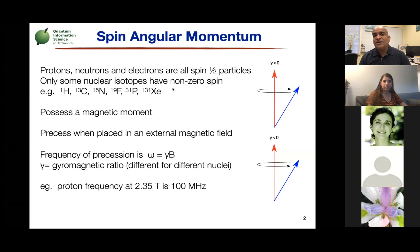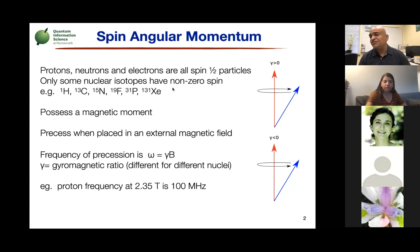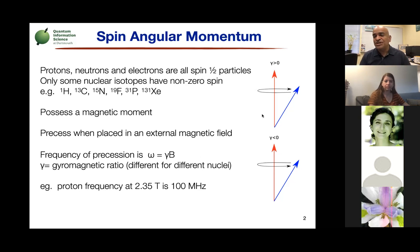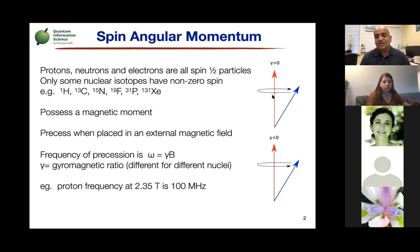A key feature of spins — systems that have non-zero spin — is that they have a magnetic moment and will precess when placed in a magnetic field. This is similar to a top precessing in Earth's gravitational field; it's a consequence of conservation of angular momentum. The precession frequency is given by the equation omega equals gamma times B, where omega is proportional to the magnetic field — the stronger the field, the faster the spins precess. In a 2 to 2.3 Tesla field, a proton has a 100 MHz Larmor frequency.